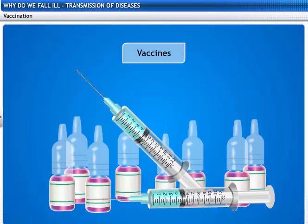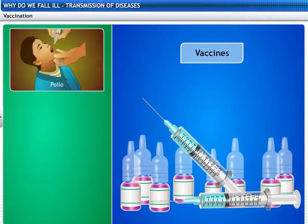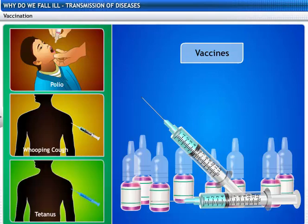Edward Jenner was called the father of immunology. There are many vaccines available that provide a means of prevention. There are vaccines against polio, whooping cough, tetanus, etc.